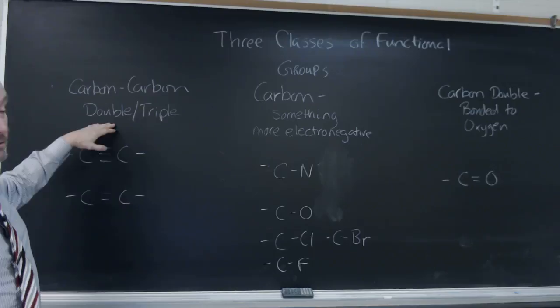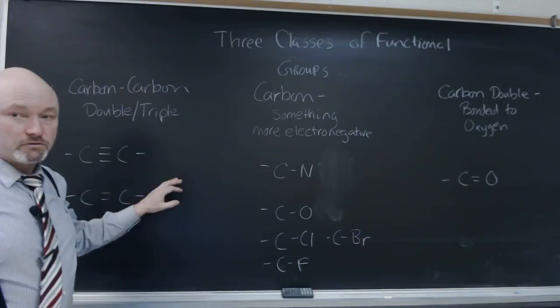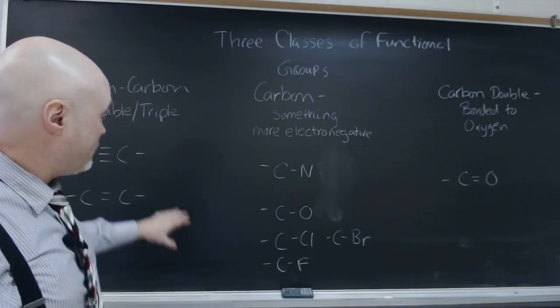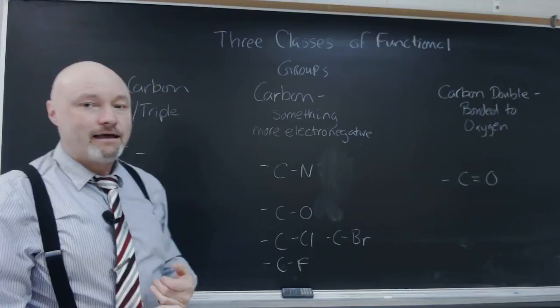The first one that we've looked at are the alkenes and the alkynes, the double and triple bonds between carbons. The big impact that this functional group has is that it makes the chemical properties of the alkyne a little bit different in that they can undergo addition reactions through the breaking of these double or triple bonds, and you can add atoms to them.